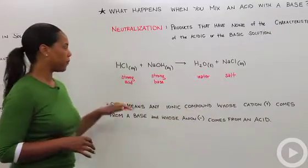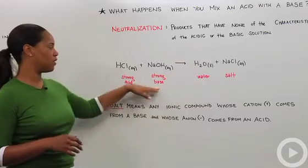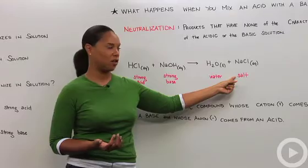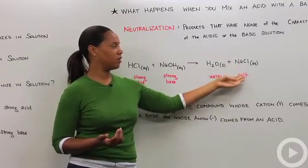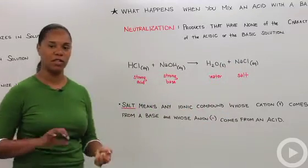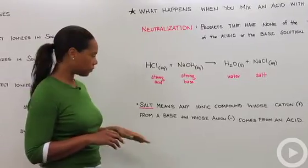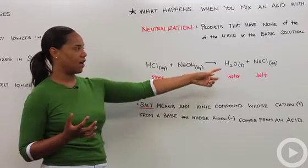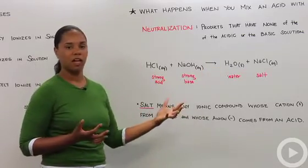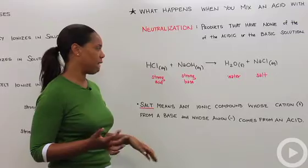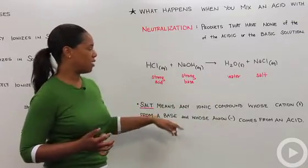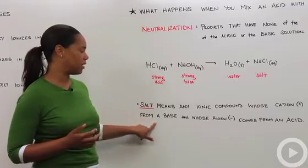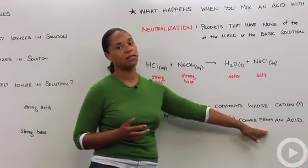We know what water is. We know what a strong base and strong acid are. So let's quickly discuss what it means for something to be a salt. Salt - sodium chloride, table salt, the stuff you put on your food - it just means that it's an ionic compound that has a positively charged ion and a negatively charged ion. Within sodium chloride, the cation (the sodium) comes from a base, and the anion part comes from an acid.